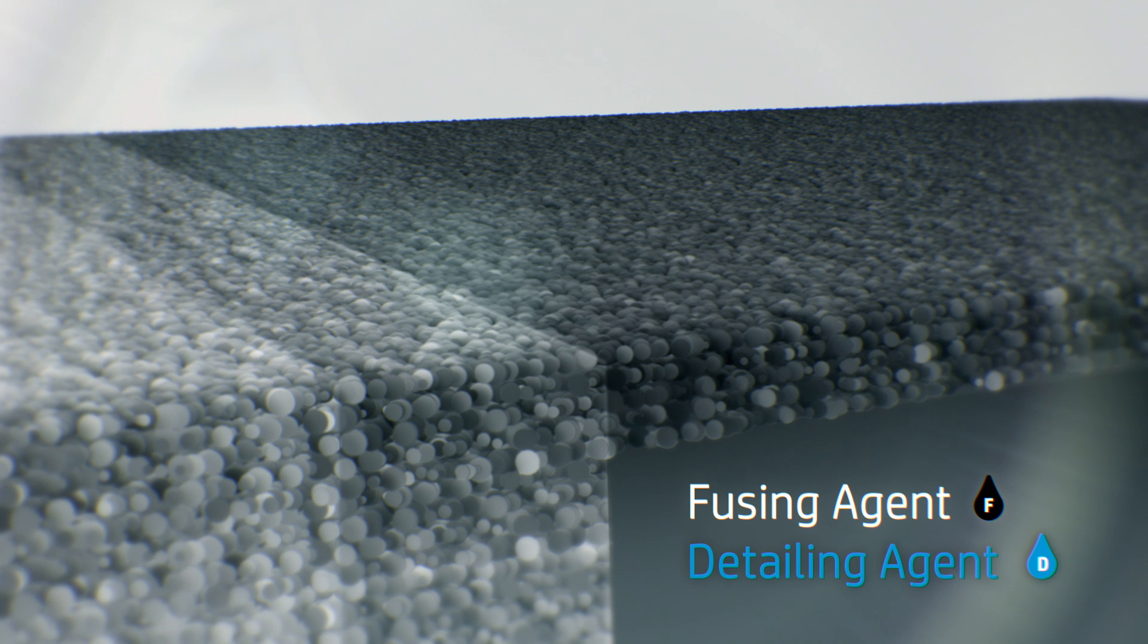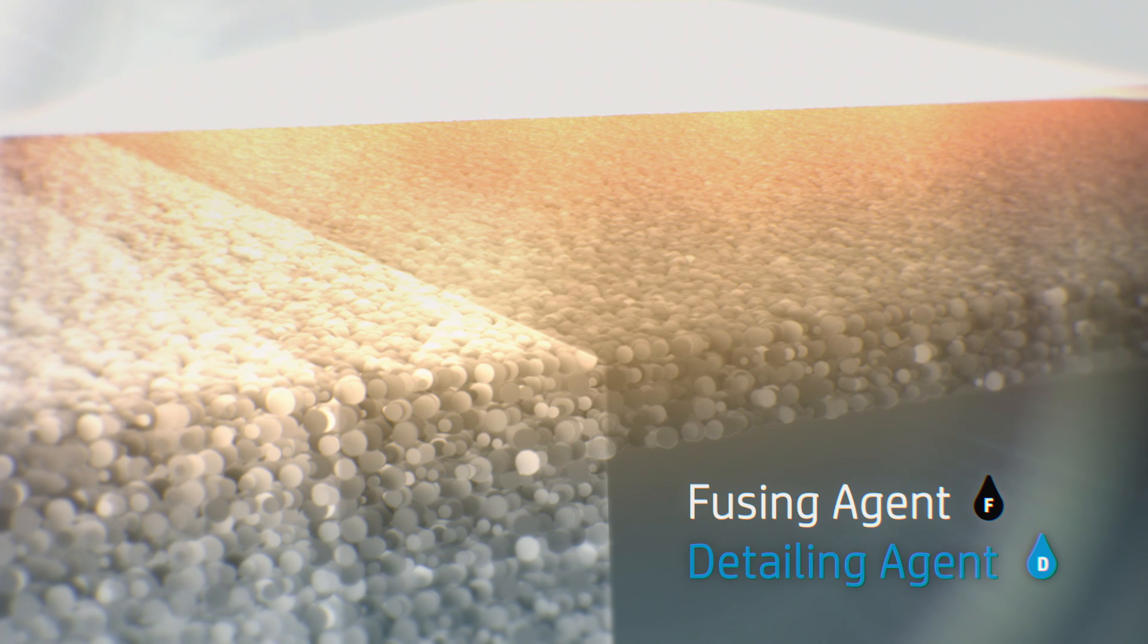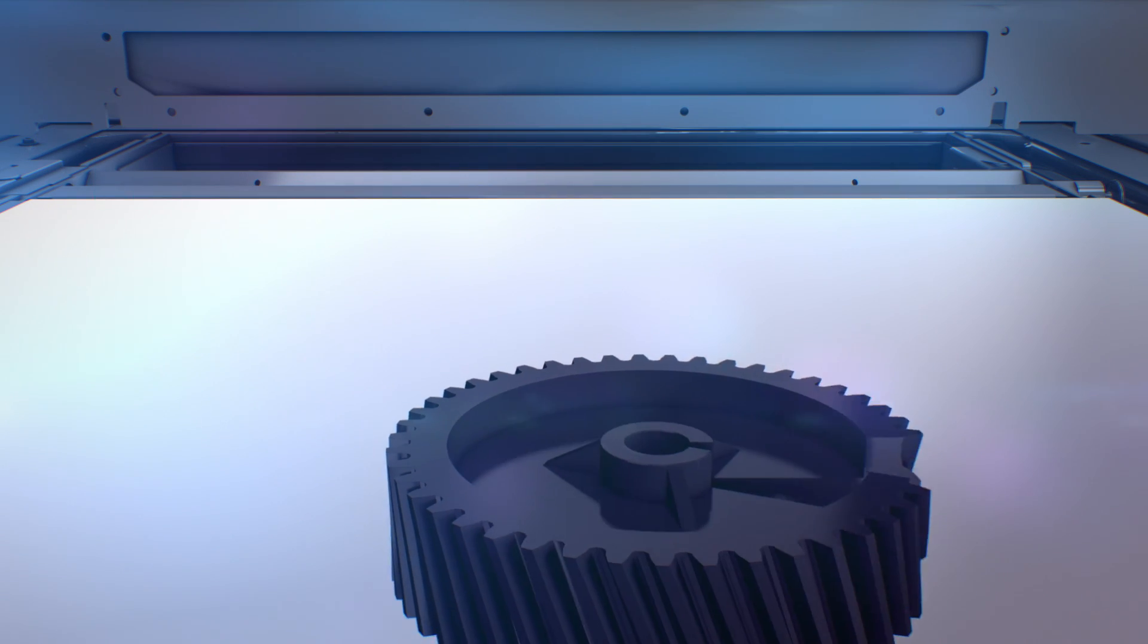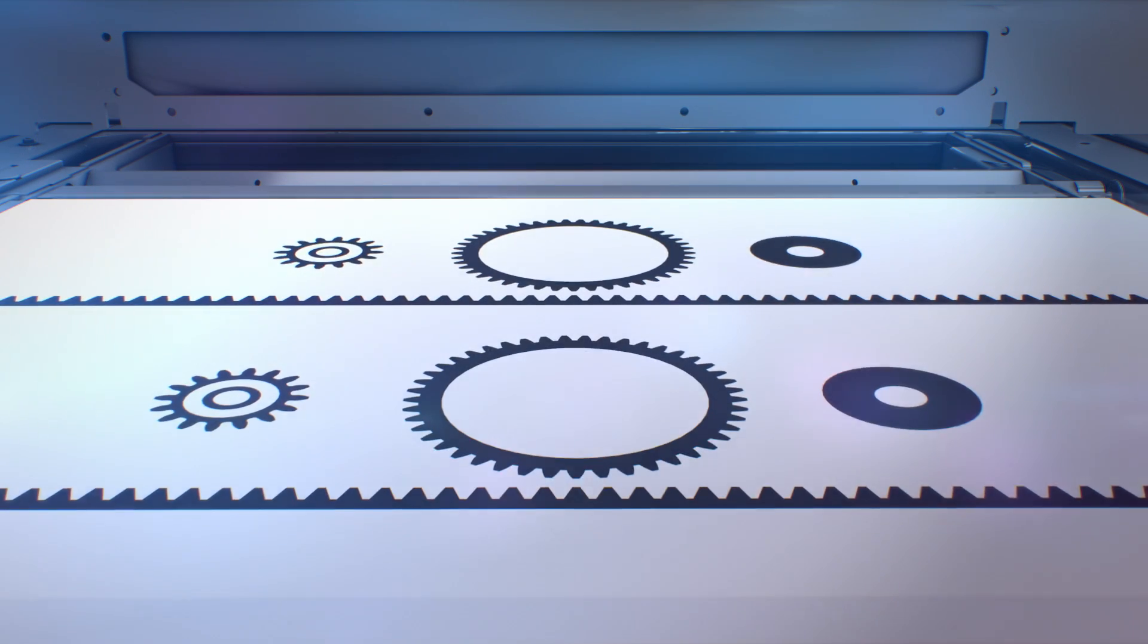The area is exposed to energy and reactions between the agents and the material cause the material to selectively fuse together to form the part. The fusing process requires accurate temperature control across the entire material layer.